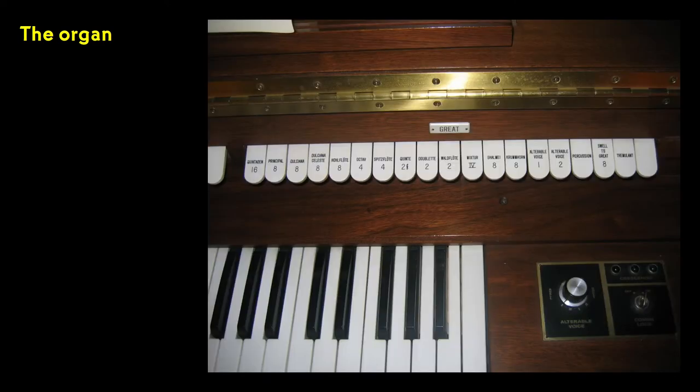In case you didn't know, the organ can produce sounds that imitate the sound of almost any musical instrument, as well as a whole set of sounds that are unique to the organ. These are presented to the organist as a series of what are called stops, and organists select among these to pick the orchestration for the piece they're playing.